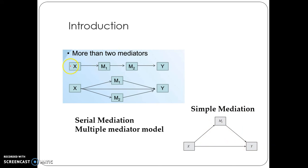But if you see this diagram, here X is affecting Y through M1 and M2. Here M1 and M2 are serially mediating the relationship between X and Y. Our ultimate goal is understanding the underlying mechanism between X and Y — how X is affecting Y through M1 and M2, and whether M1 and M2 are serially transmitting the effect of X on Y.